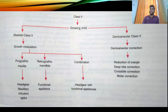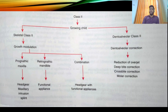Dentoalveolar Class 2 can be treated by correction of the dentoalveolar segment, which includes reduction of overjet, deep bite correction, crossbite correction, and molar correction.